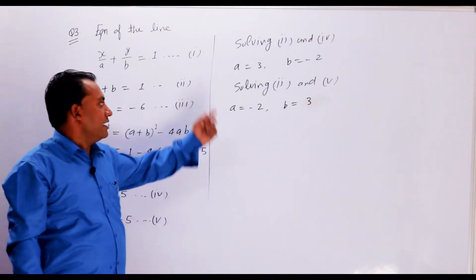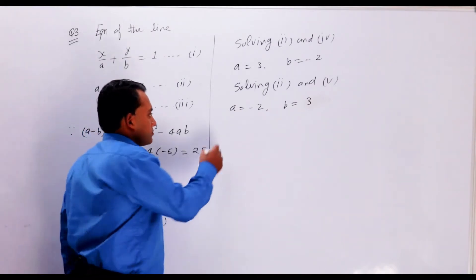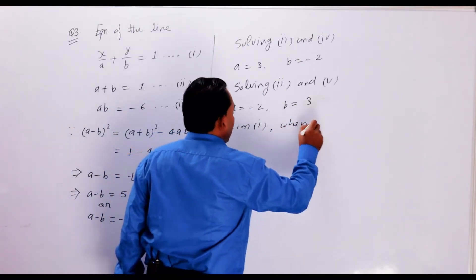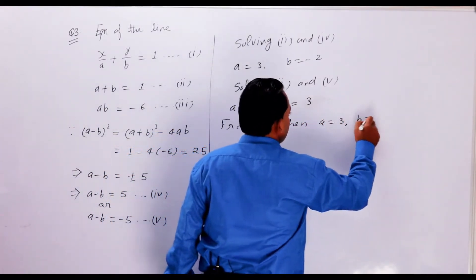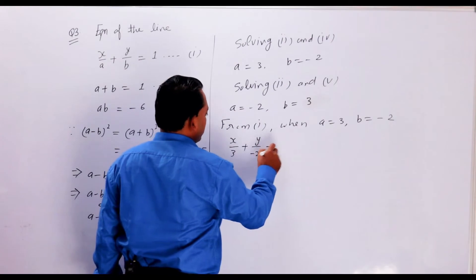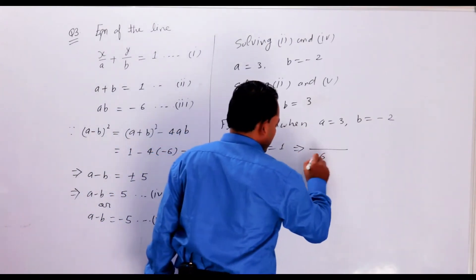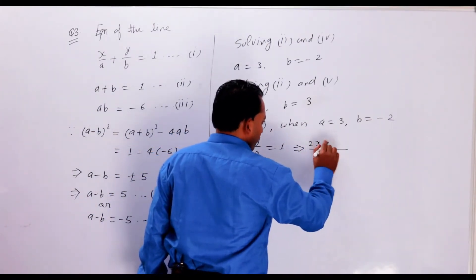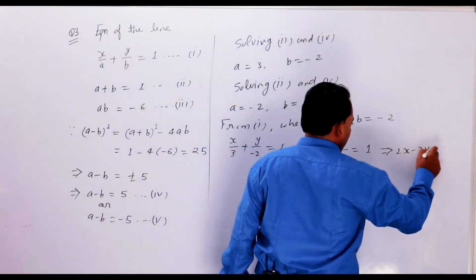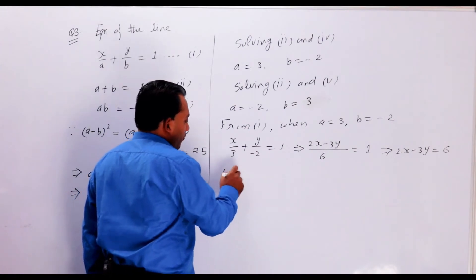So we get two values of A and B. Putting these into the first equation (intercept form): when A is equal to 3 and B is equal to minus 2, we get x upon 3 plus y upon minus 2 is equal to 1. Taking LCM as 6, this becomes 2x minus 3y is equal to 6.